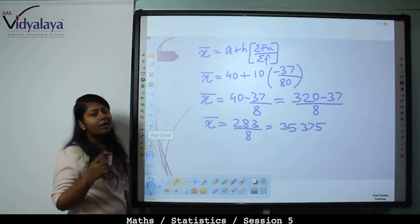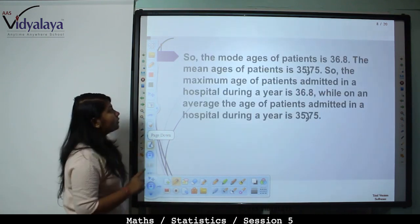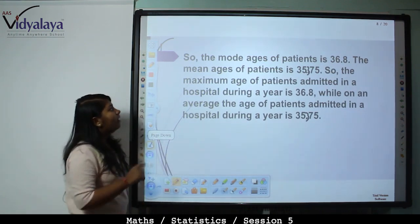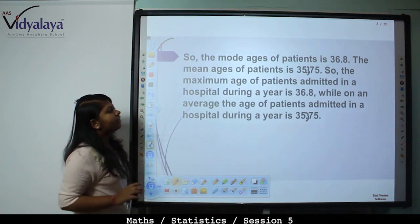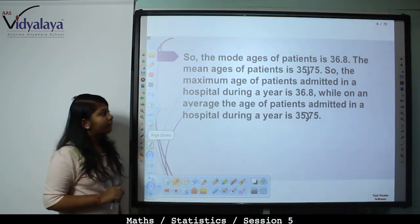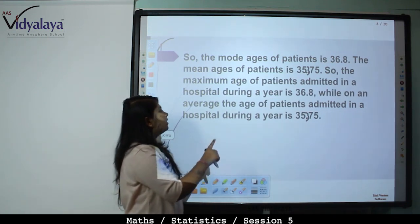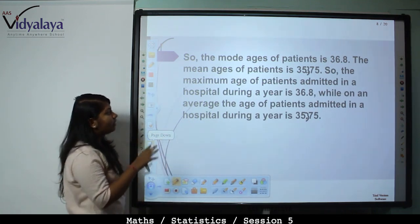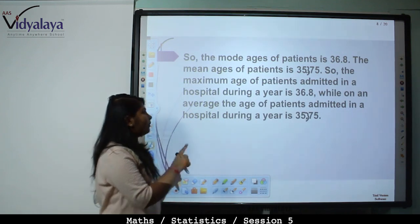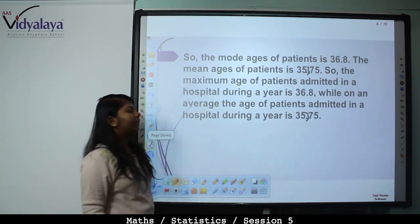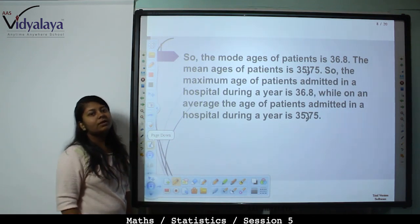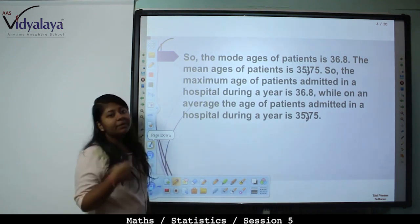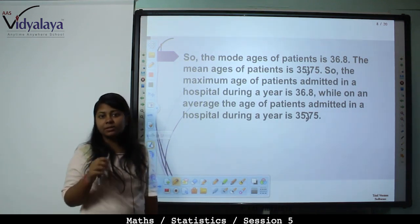The mean is 35.375. The mode age of patients is 36.8 years, and the mean age of patients is 35.375 years. So the maximum age of patients admitted in a hospital during a year is 36.8, while on average the age of patients admitted is 35.375. Mean means average; mode means the maximum occurring value.